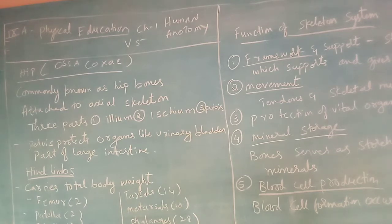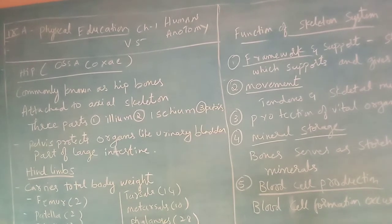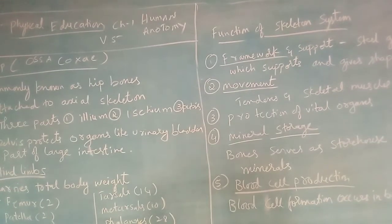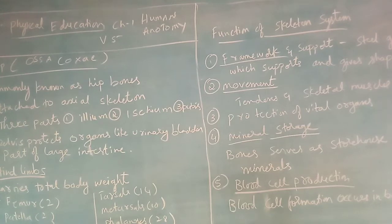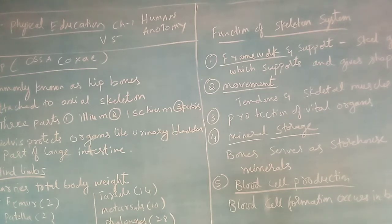Now in today's class we will see the hip girdle, commonly known as hip bones. They are attached to the axial skeleton. There are two types of skeleton: axial skeleton and appendicular skeleton. The axial skeleton refers to the bones from the skull down to the spinal cord, and under that we have three parts.